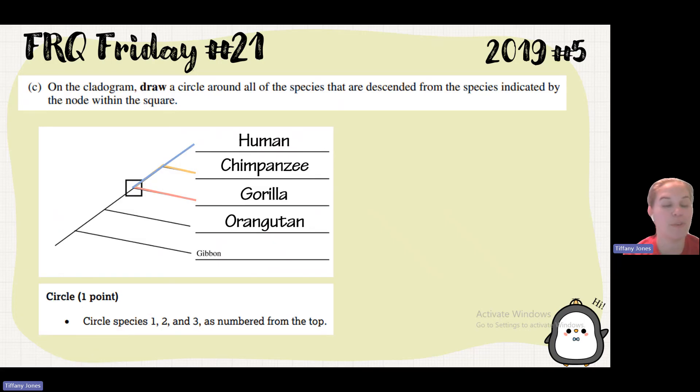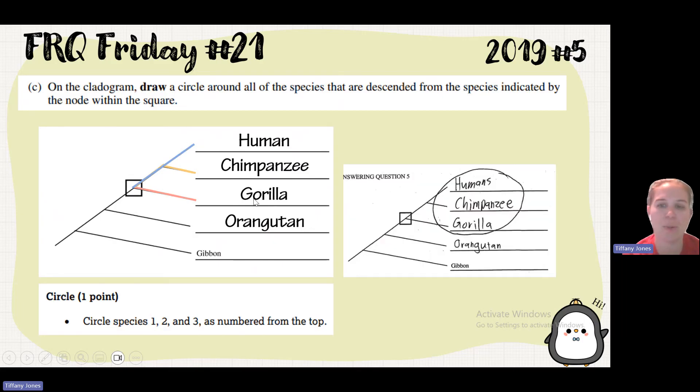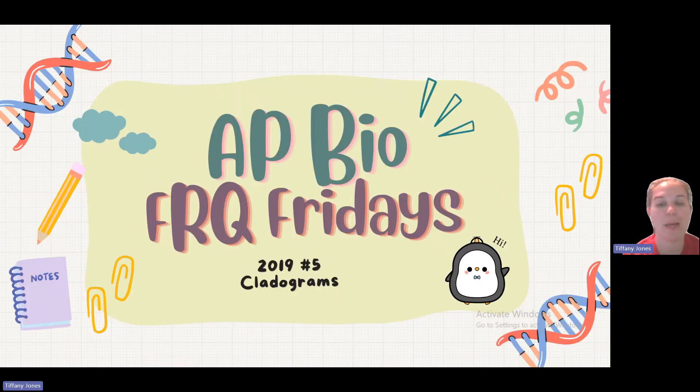So circling one, two, and three numbered from the top. Notice that they did not put specific organisms here because if you understood that these three organisms right here were descendants of the boxed one, you did not lose points for incorrectly placing them on a cladogram. And so here the student did it. And then of course they got that answer.